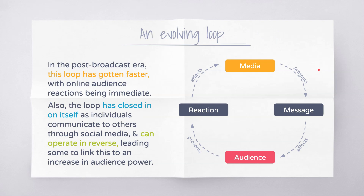In more recent times in a post-broadcast era, we can understand that this feedback loop has gotten much faster with online audience reactions being immediate. During the broadcast era, a newspaper would create a message — publish an article — and the audience would read it, and then perhaps present back a reaction in terms of letters to the newspaper editor. Those letters would arrive two or three days later, giving that feedback to the media to suggest that either their audience was rejecting or supporting their original message. Cinemas even today still operate off box office results which are released weekly.